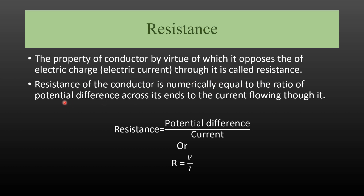The resistance of a conductor is numerically equal to the ratio of the potential difference across its ends to the current flowing through it. So we write R is equal to V upon I.